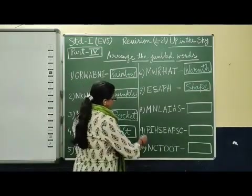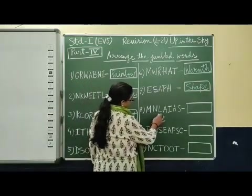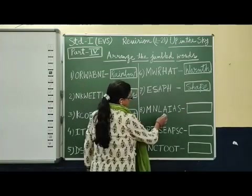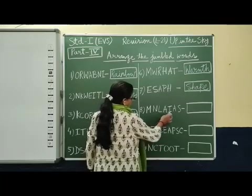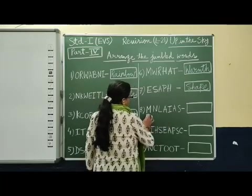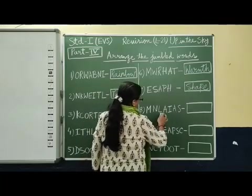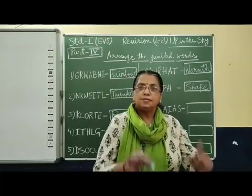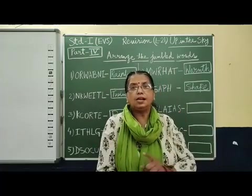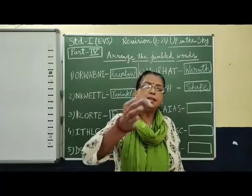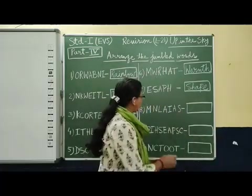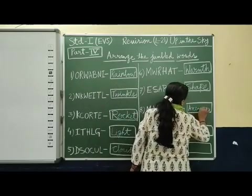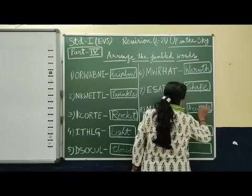Now next one: M, N, L, A, I, A, S. Which spelling? See here: A, N, I, M, A, L, S — Animals. All animals live on the earth and the sun's heat and light is needed. A, N, I, M, A, L, S — Animals.